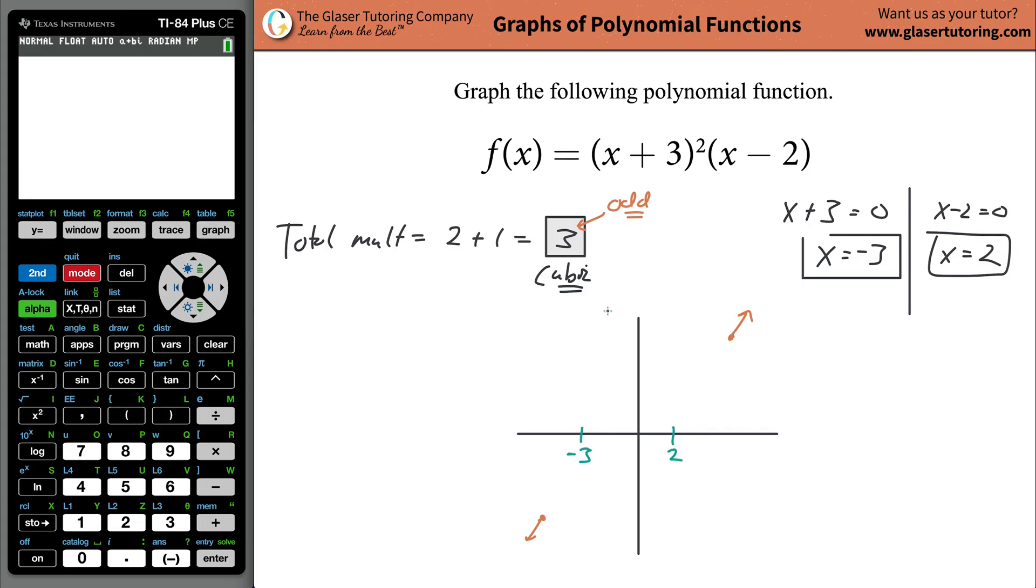Now, what happens, whether this function now, you might notice, whether the function crosses that point at negative three, or whether it comes up and bounces, what we call, will totally depend on the multiplicity, meaning the power of that particular factor. So even multiplicities, even multiplicities bounce for that individual factor. Odd multiplicities, which we have here for this factor, the power is one, they cross.